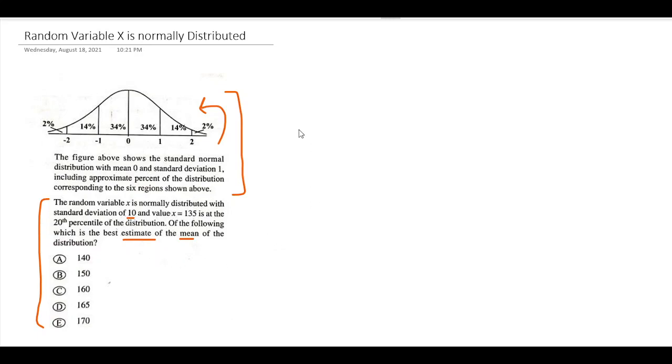So the first thing we probably need to do is draw a bell curve over here. Let's draw it out even though it's ugly but you get the idea. Let's try it out. So I got 34 over here, 34 over here, then we have 14 over here and 14 over here.